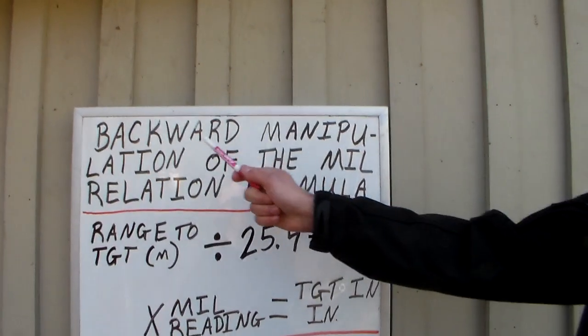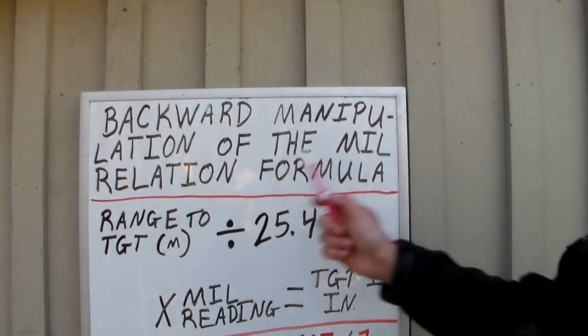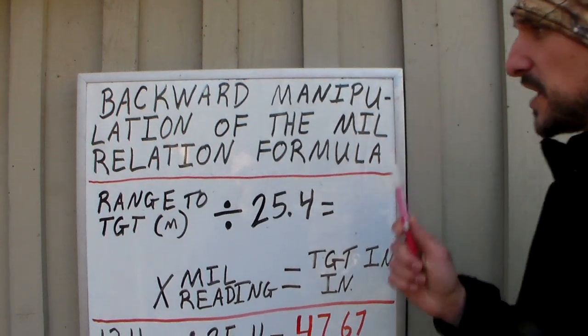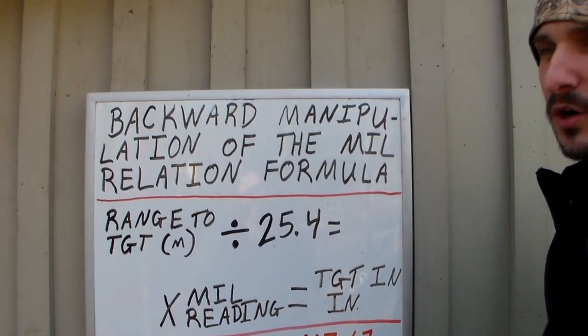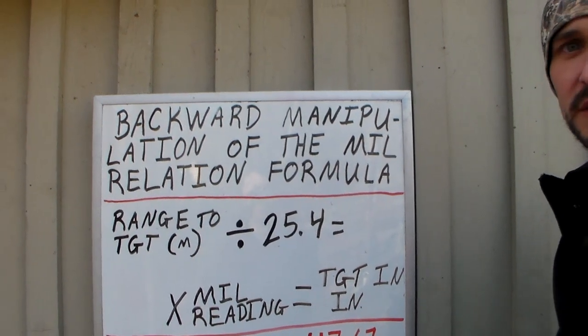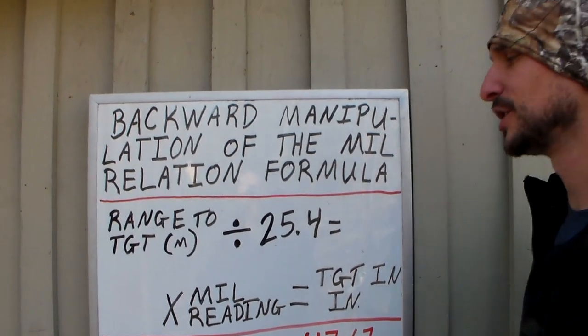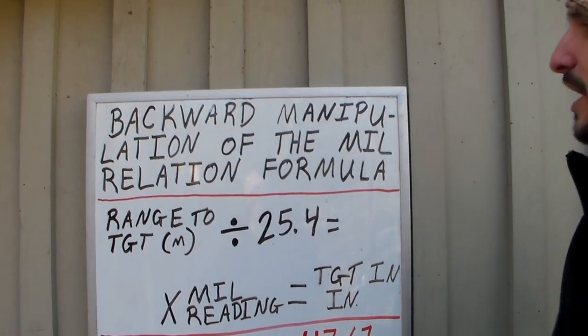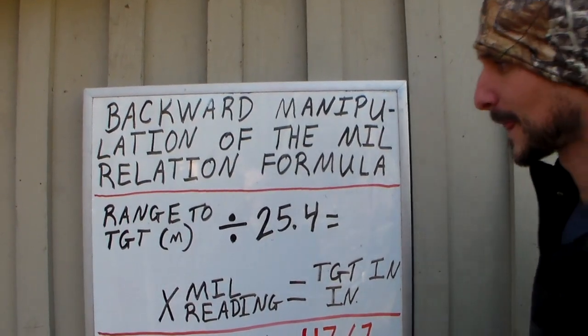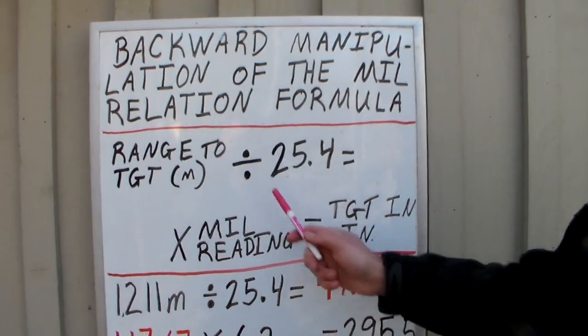So like I said, we're going to be doing backwards manipulation of the mill relation formula. If you have not yet watched my first video on the mill relation formula, we are going to put it down in the comment section and in the description. You need to have a good understanding of the mill relation formula before we start trying to manipulate this backwards. Okay, so I broke it down into two parts here.